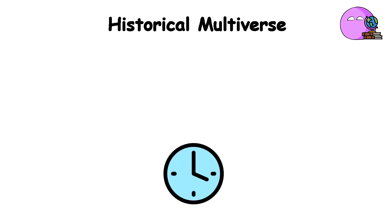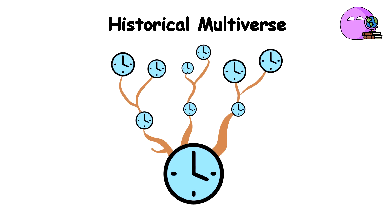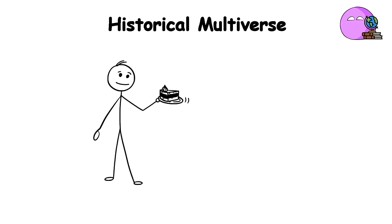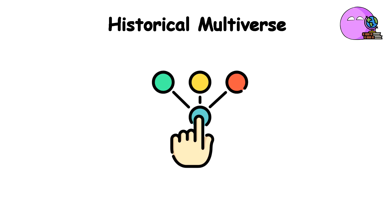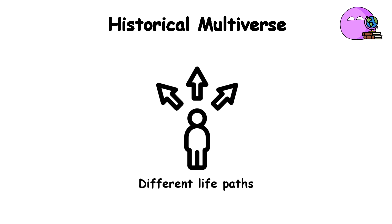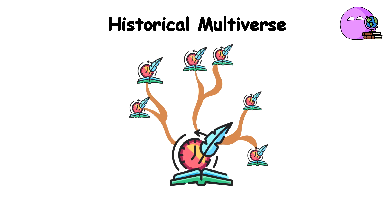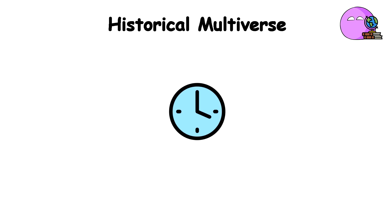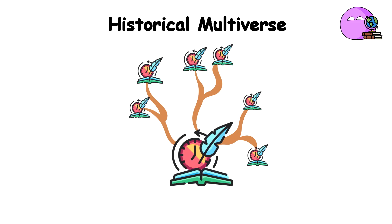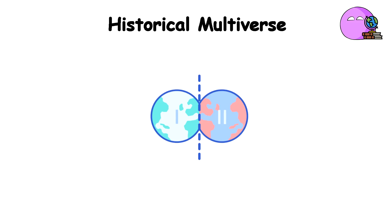So from one timeline, another timeline branches off, then those branch into more timelines, and so on. In one timeline, you decide to have that extra slice of cake, and in another, you skip it and go for a run. These seemingly minor choices can lead to vastly different life paths. The result is a historical multiverse, containing every possible version of history branching out. We can only experience one timeline at a time, but the other branches still exist in parallel.